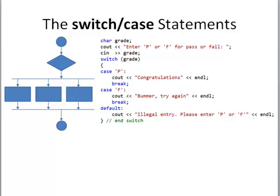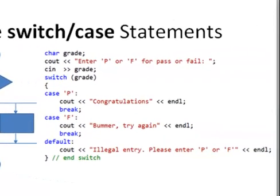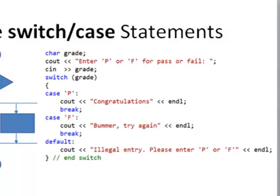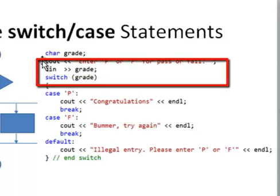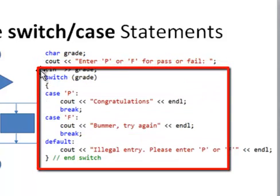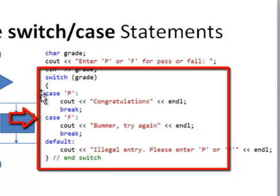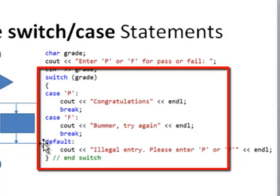Here is a flowchart showing a multi-way branch and some sample code. Suppose somebody had a pass or fail for a driver's license, so they enter P or F. We input using the keyboard and use the switch statement. If somebody entered a P, we say congratulations. If they entered an F, we say bummer, try again. If they entered anything else, we say illegal entry — please enter P or F.